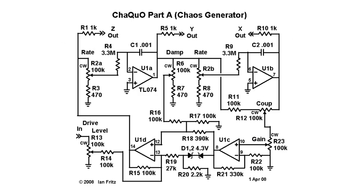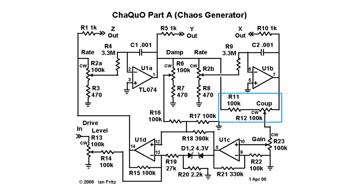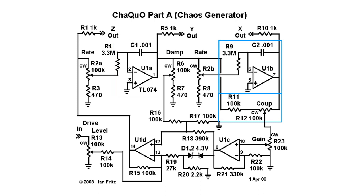Ian Fritz added a couple of interesting little details to this circuit. There's gain, which is a second feedback path going through an additional section. And coupling — the size of that second feedback path — comes from either the first pole or the second pole of our filter.